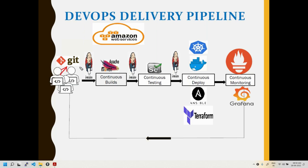Developers write and place code in GitHub; you pull it for continuous builds — all automated via Jenkins. Maven handles the build, automated test cases run, then deployment uses Docker, infrastructure is built with Terraform, and once deployed it's monitored using Prometheus and Grafana, with feedback sent to the respective teams.